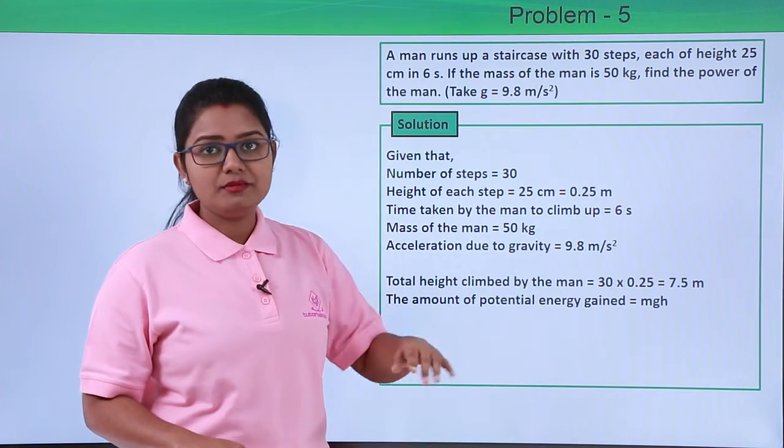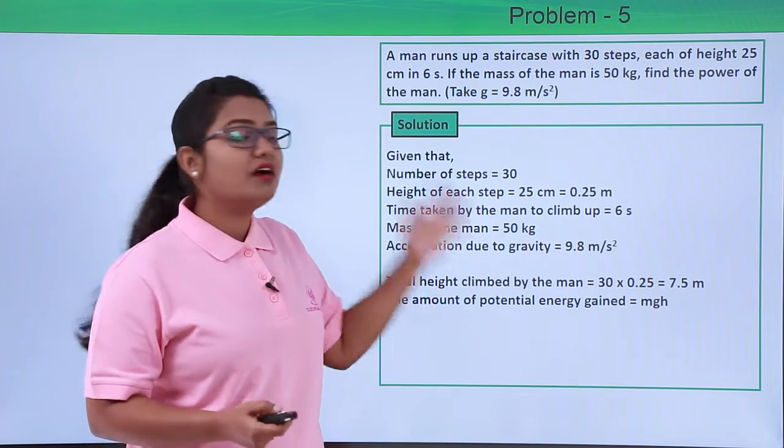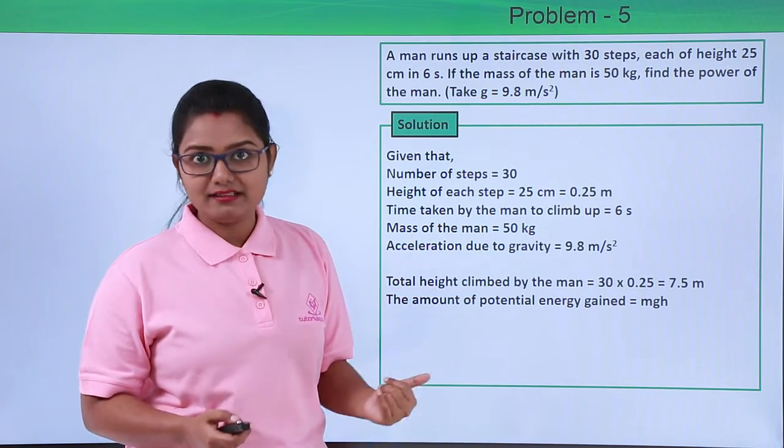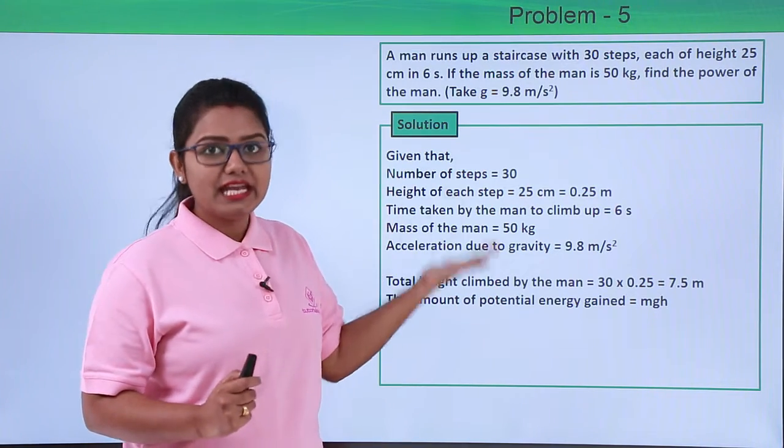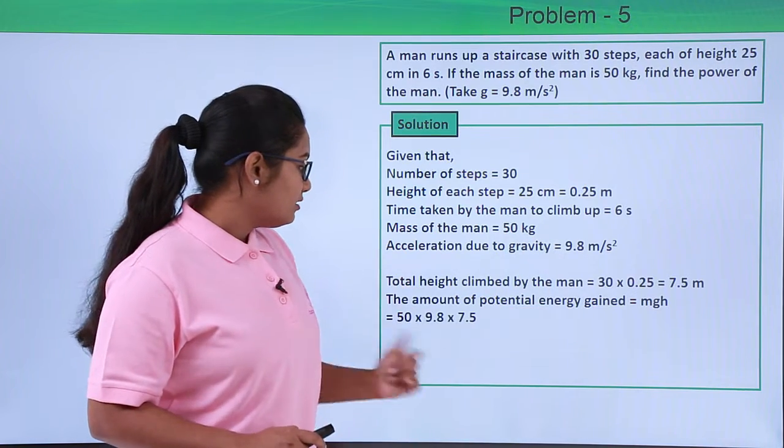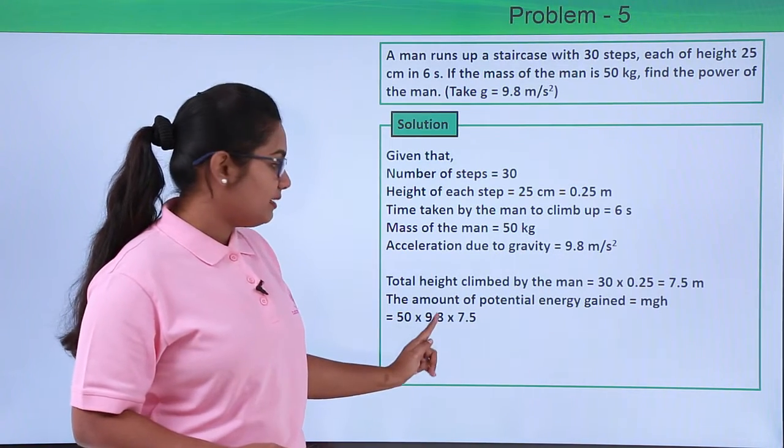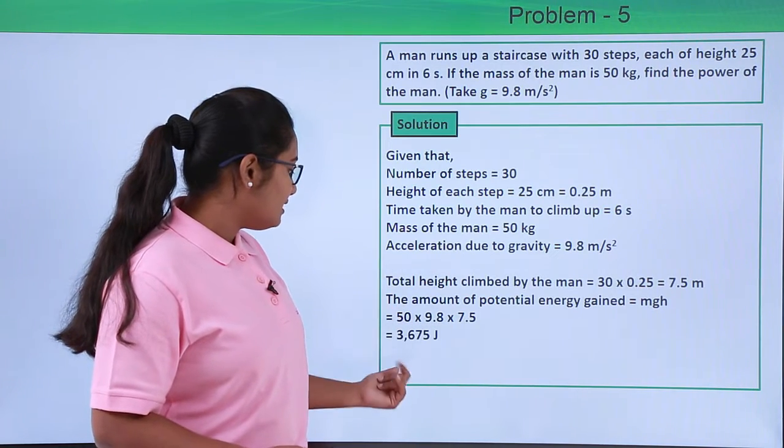Now the amount of potential energy gained by the man on climbing up that height is what we call the work done by the man. So the work done by the man, or the potential energy gained by the man on reaching that height, is MGH. So this equals 50 multiplied by 9.8 multiplied by 7.5. Now this turns out